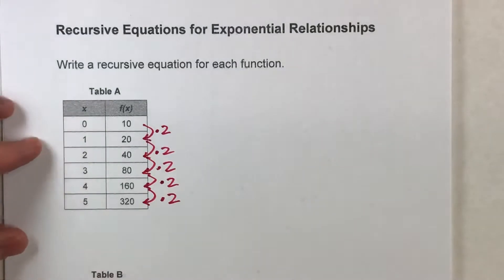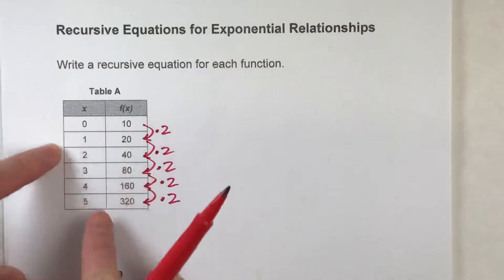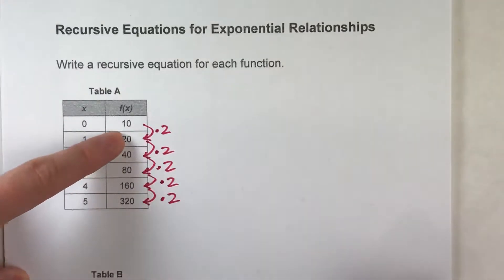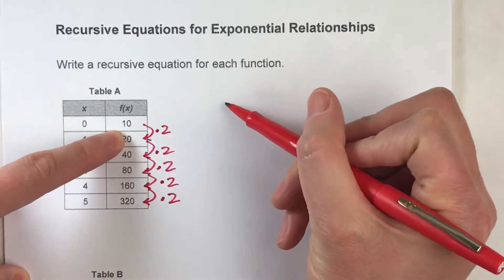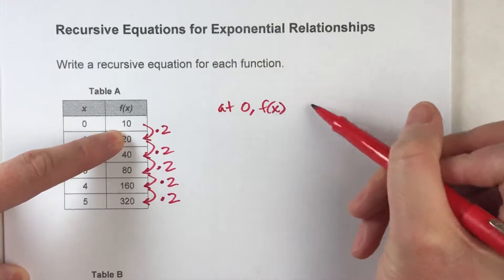So to write the recursive equation, we need to know two things. First, what does the table start at? In this case, when x is zero, f of x starts at 10. So we know at zero, f of x starts at 10.